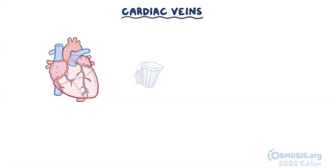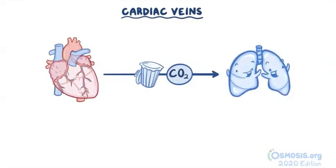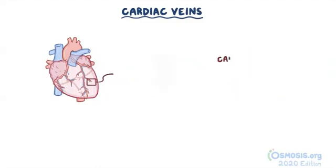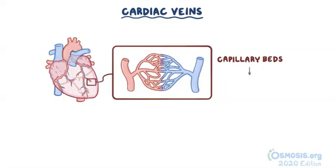The coronary circulation is also made up of veins called cardiac veins, which are responsible for returning deoxygenated blood and waste products like carbon dioxide from the myocardium to the lungs. Blood moves from the capillary beds of the myocardium into the cardiac veins, which usually follow the same path as the coronary arteries.